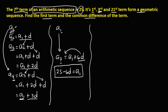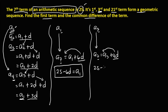From the 3rd term to the 7th term: a3 plus (7 minus 3) times d equals a7, so a3 plus 4d equals 25. Transposing, a3 equals 25 minus 4d. This is the second equation.